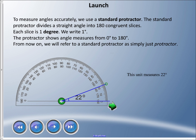When we measure angles accurately, we use something called a standard protractor. I have a picture of one below. The standard protractor divides a straight angle into 180 congruent slices. That big fancy word congruent means equal - they're the same. Each slice is worth one degree, and we write one degree with that symbol that looks similar to Celsius or Fahrenheit.